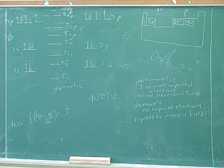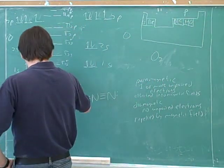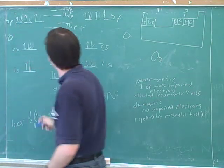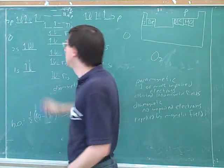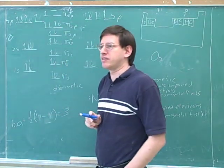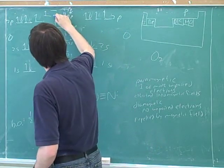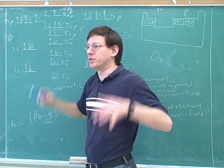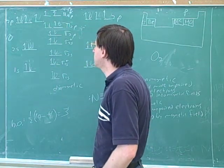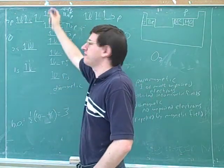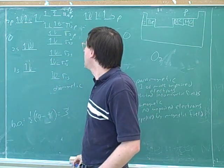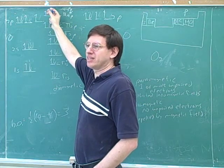How many electrons are we placing in total? 16. Counting: 1, 2, 3, 4, 5, 6, 7, 8, 9, 10, 11, 12, 13, 14, 15 — and where does the 16th go? Not here, but here according to Hund's rule. So this is the correct picture. Notice it's futile to start putting in the electrons until you have the dashes in the right place. First we put in the dashes, only then do we put in the electrons. And notice this orbital still exists even though it's empty — we should still draw it.